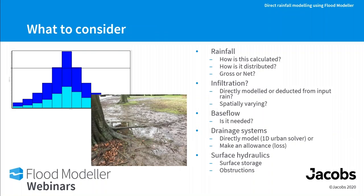There are many issues to consider before undertaking direct rainfall modelling. The first is rainfall itself — the main boundary for your model. This can be observed, using a rain gauge in your catchment, or more traditionally a design rainfall, such as a 1-in-100-year event with a 10-hour storm duration, calculated from an IDF curve. For observed data you need to consider gauge quality, spatial variation in rainfall, and whether adjustments are needed.